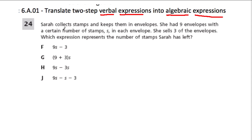Right here we have a problem. Sarah collects stamps and keeps them in envelopes. She had nine envelopes with a certain number of stamps, S. So they'll always give us the variable just like that. They'll say the thing the variable represents, here the stamps, and then the letter that represents it, so S. So she had nine envelopes with a certain number of stamps, S, in each envelope.